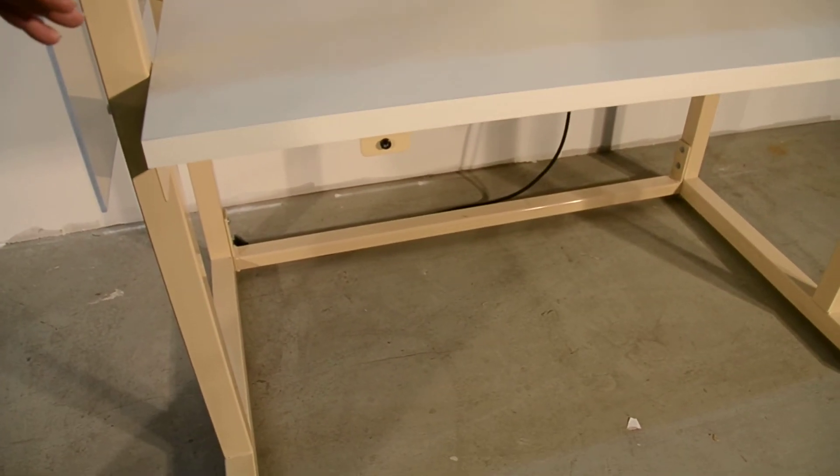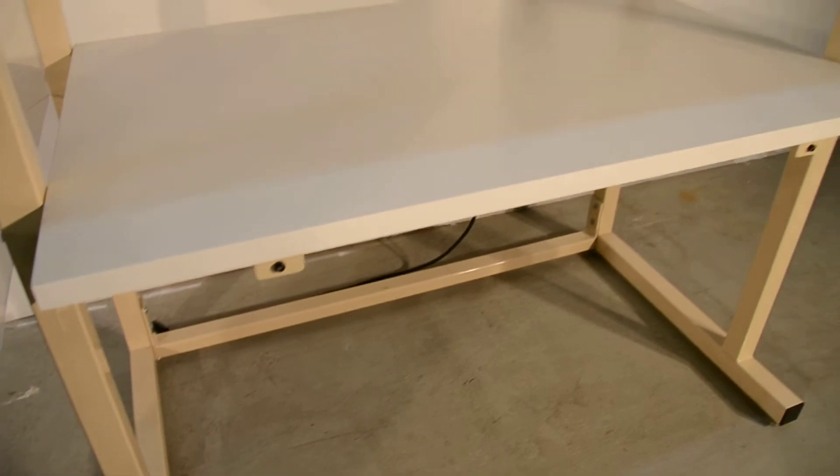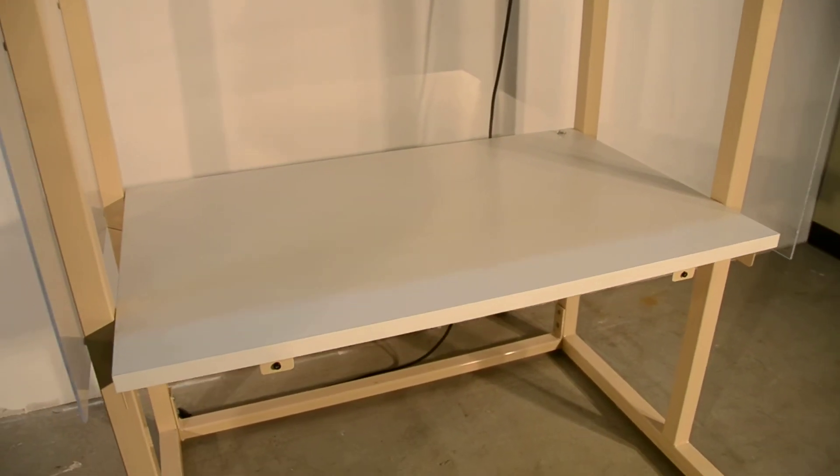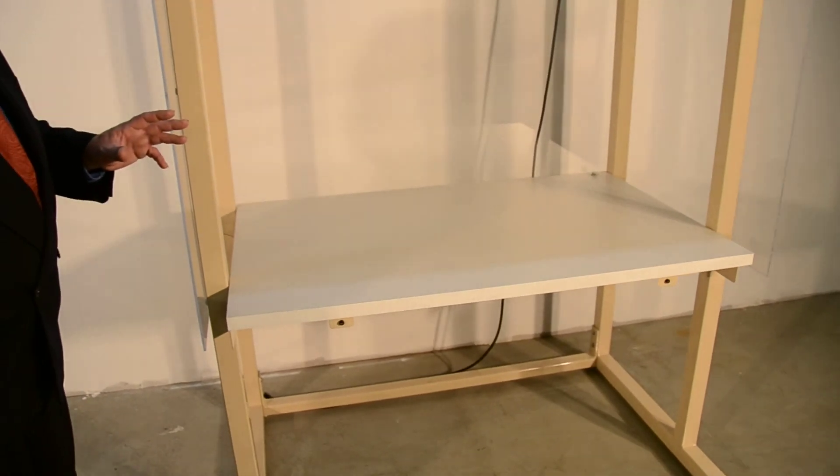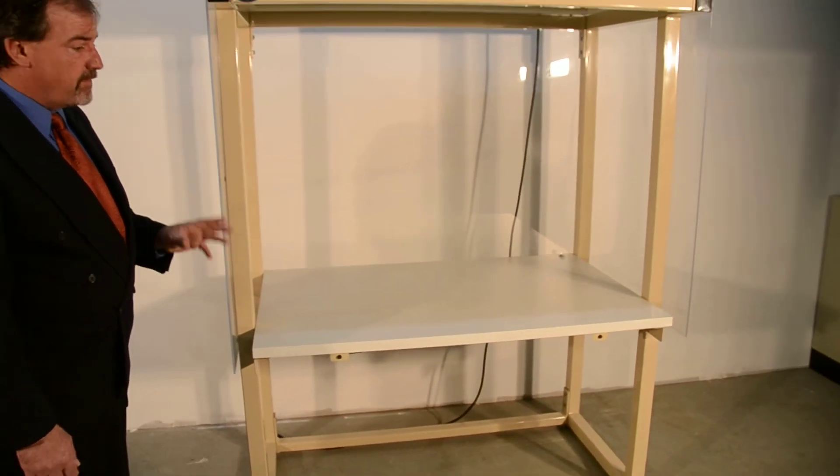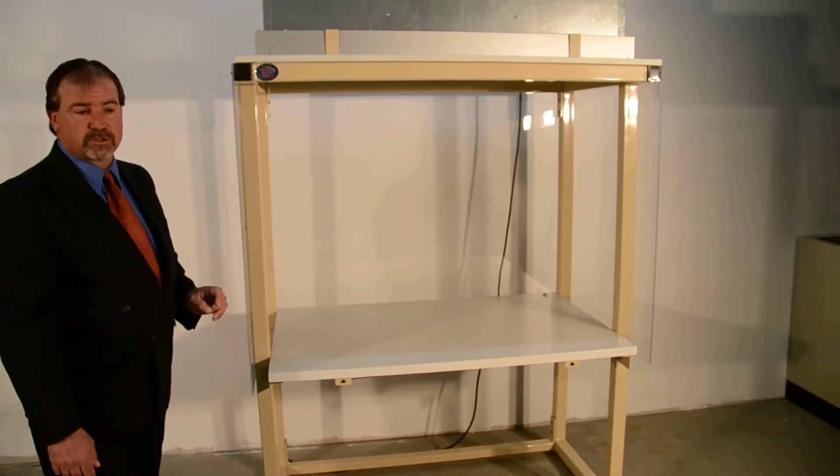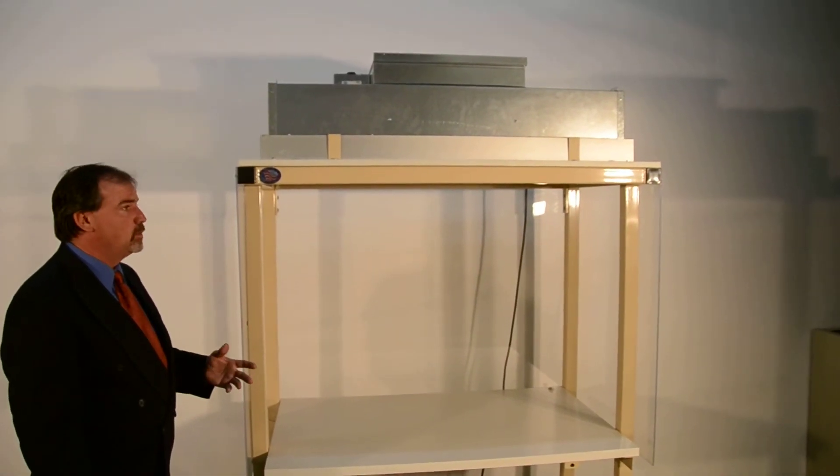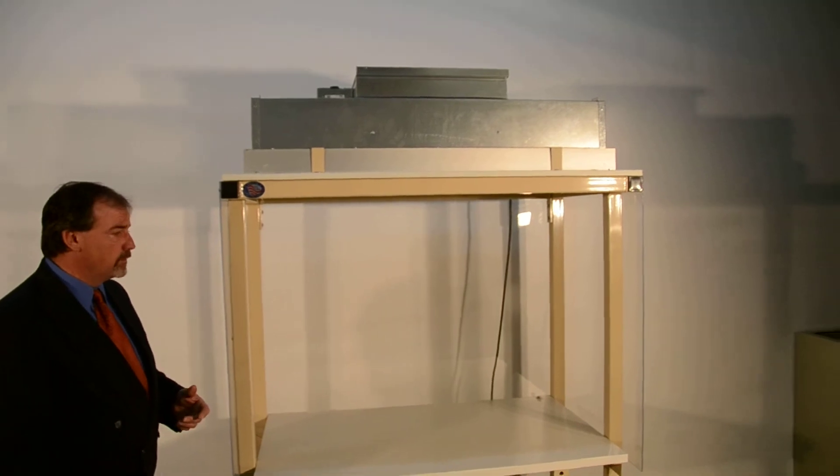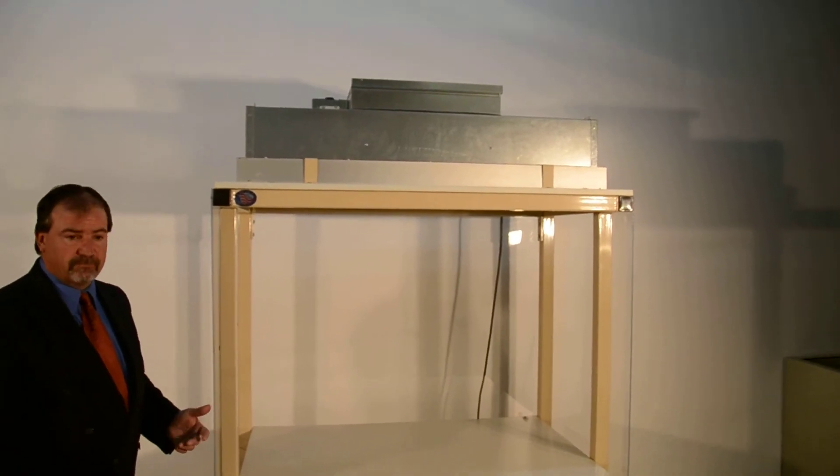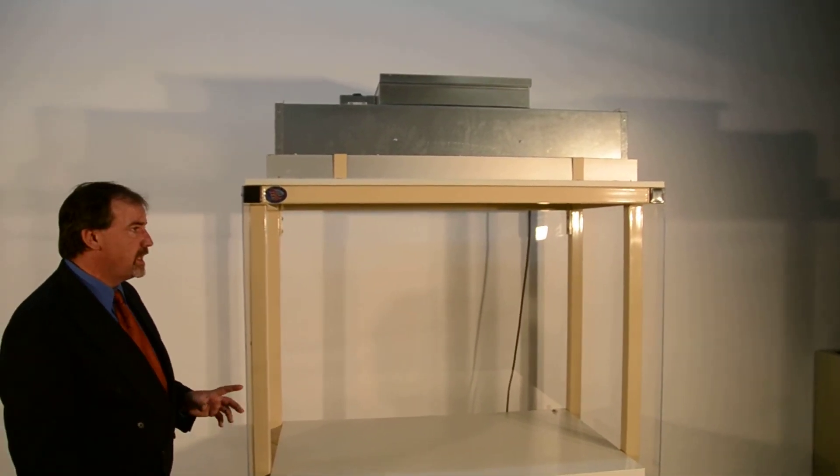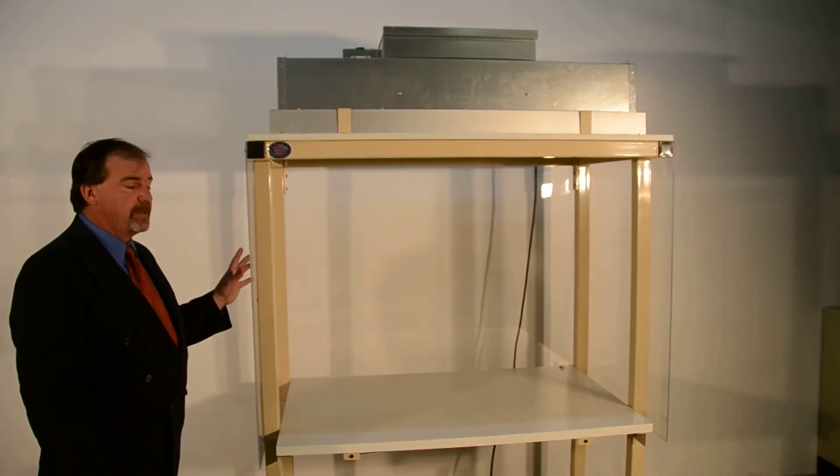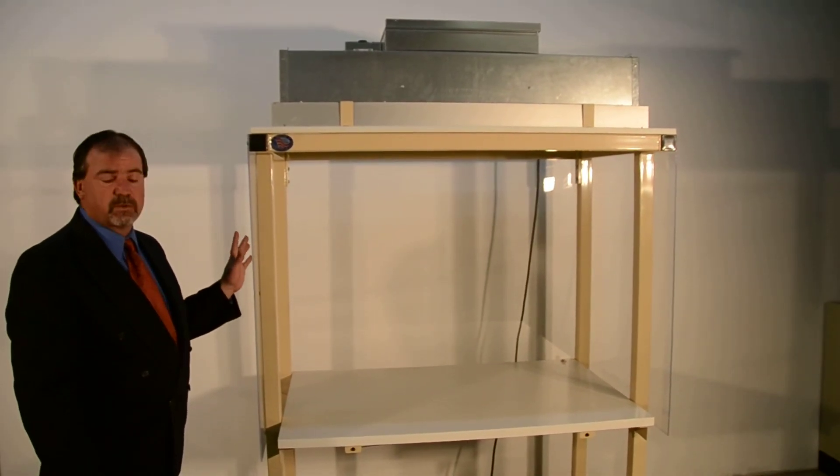This unit is available in multiple sizes from 48 up to 72 inches. This is a very inexpensive alternative to putting a full room in. Typically, when you need to build a Class 100 room, you're looking at $25,000, $40,000, $50,000, versus this unit is in the area depending on the size, around $2,700.